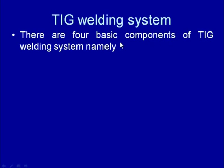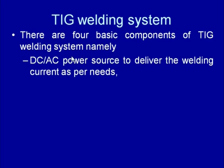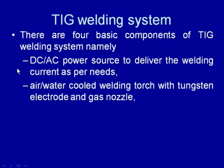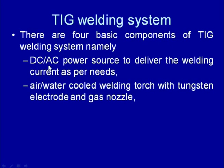The GTA welding system requires a suitable power supply — either AC or DC — to obtain the desired welding current. The selection of the type of welding current is governed by the kind of metal being welded and the arc stability desired. AC is used for aluminum welding, while DC is preferred for better electrode life. A cooling system is used with GTAW to maintain electrode temperature within safe limits, achieving a longer electrode life.